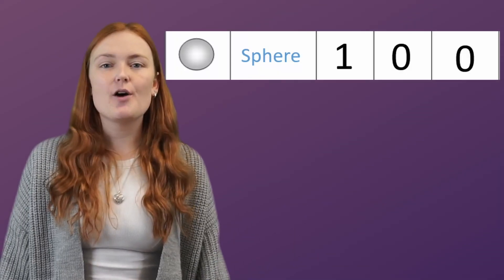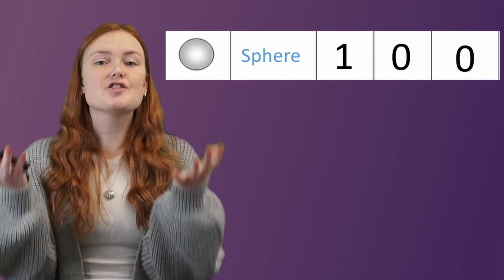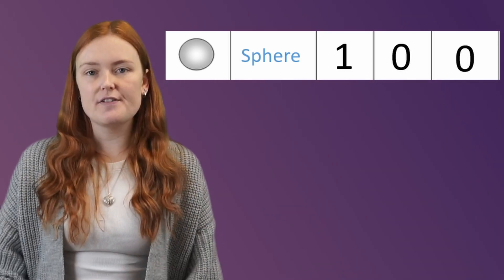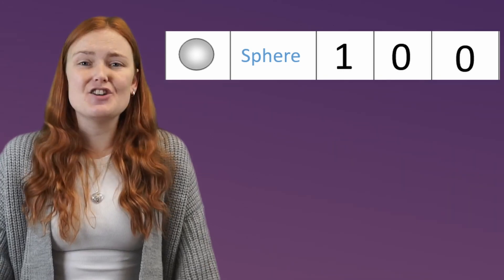Next we have a sphere. A sphere only has 1 face because it's just a ball. So it has 1 face, no edges and no vertices.